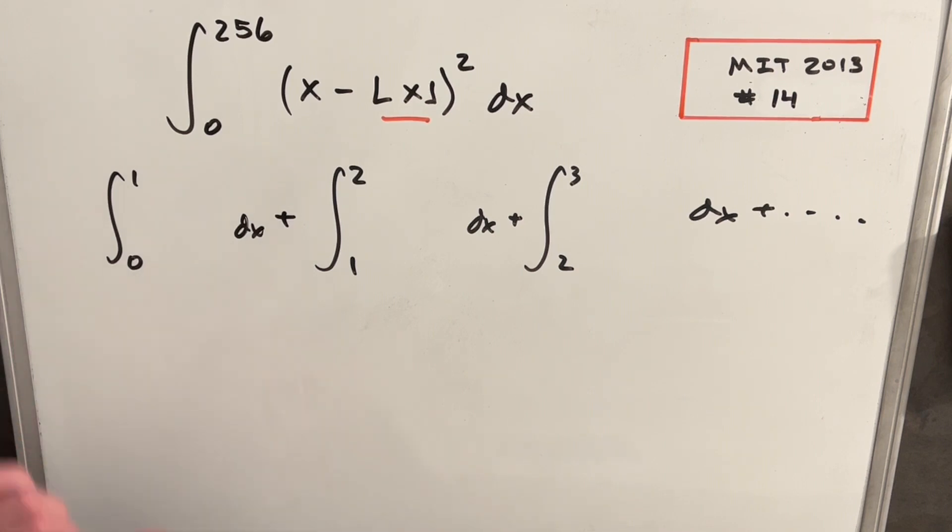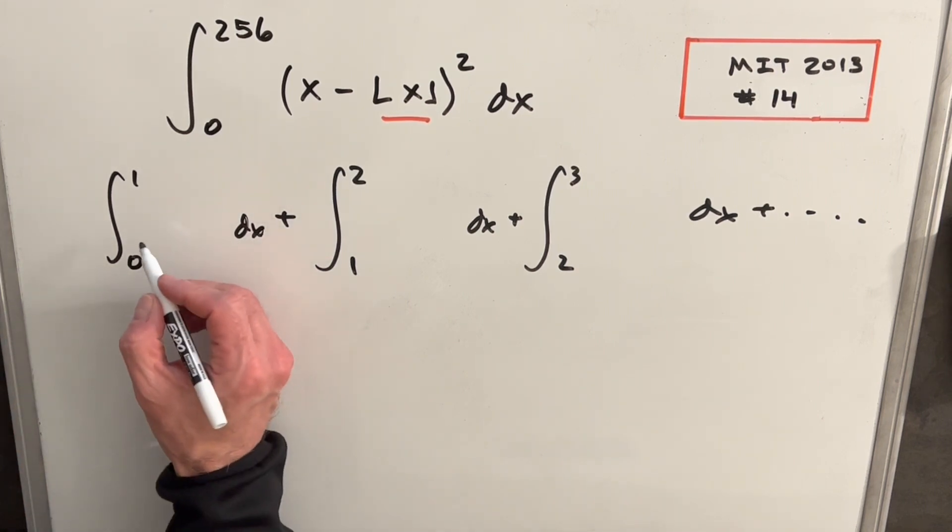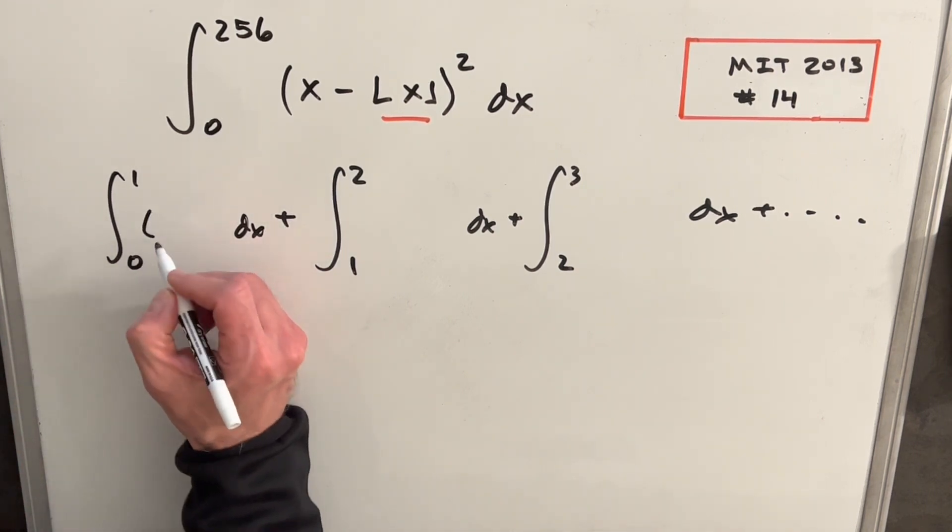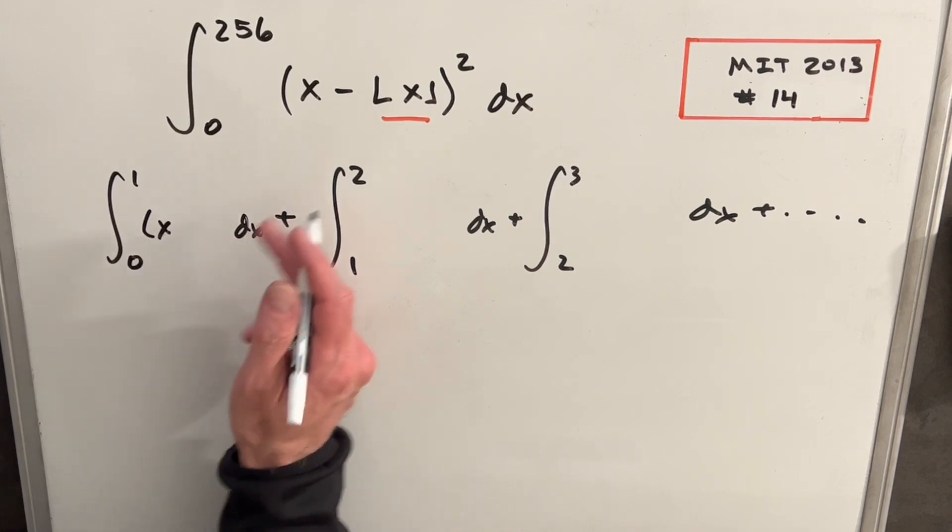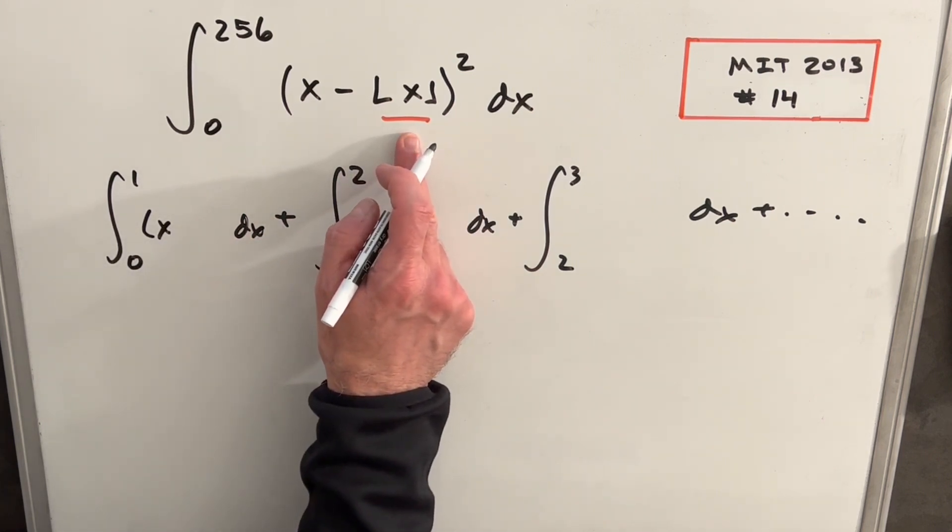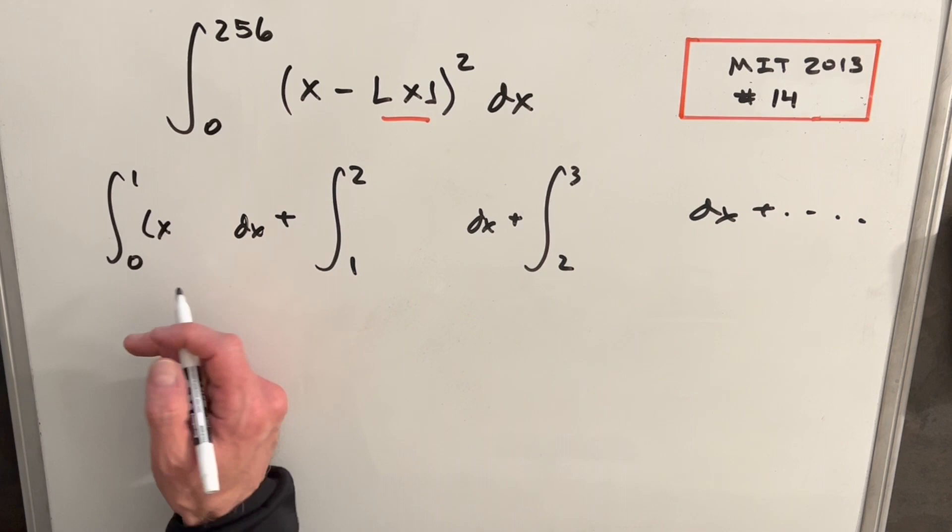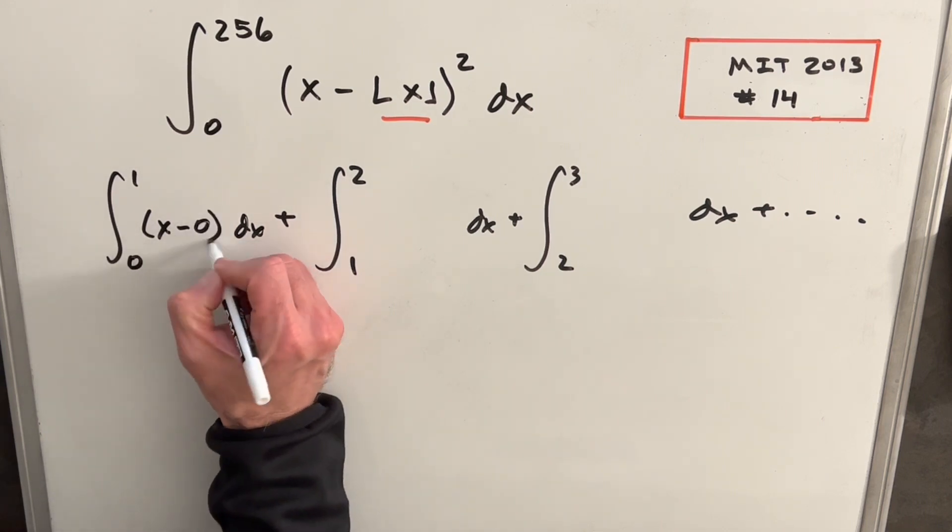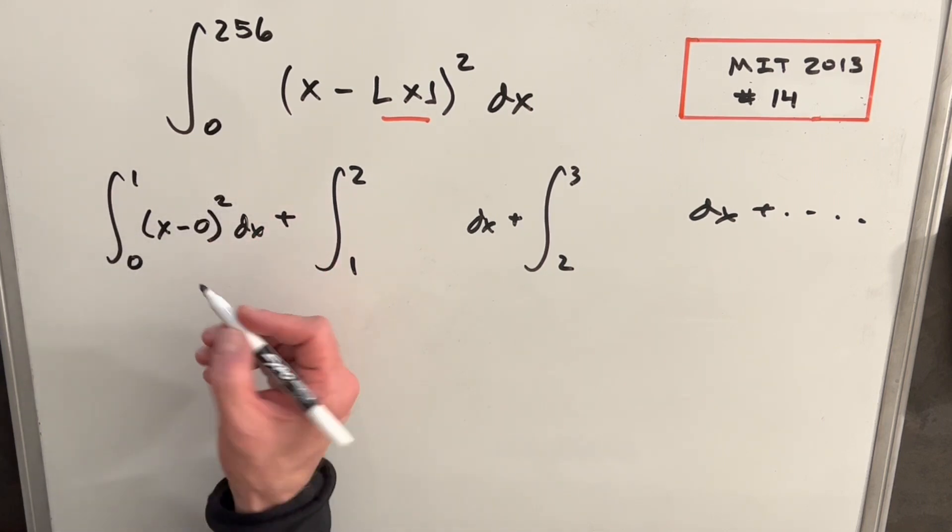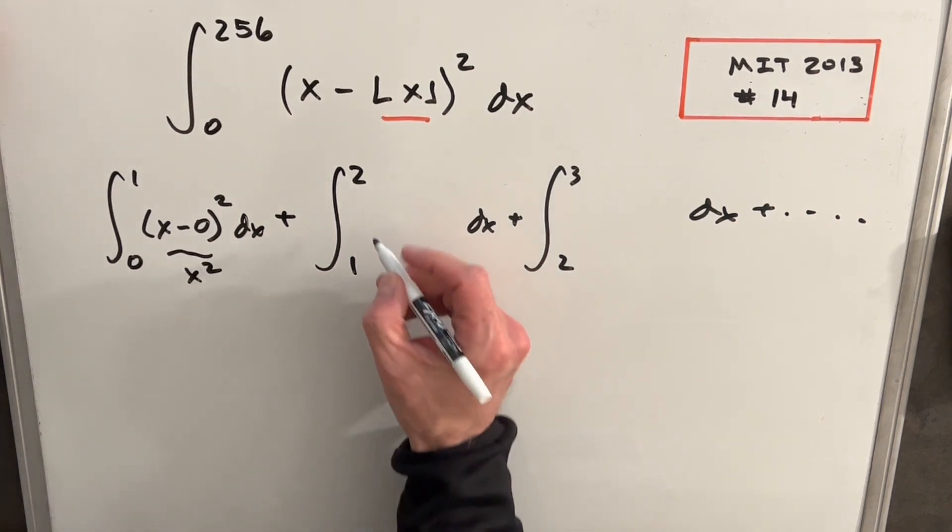Let's start looking at them individually. For this first one here, x is going to be x. Now our floor function, between 0 and 1, the floor is going to take it down to 0. So we essentially have x minus 0 squared.